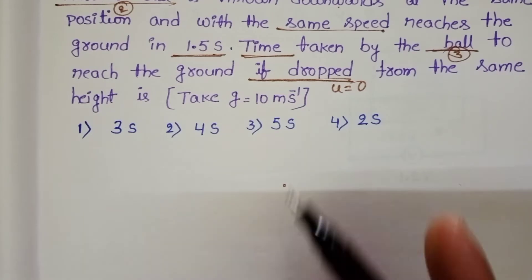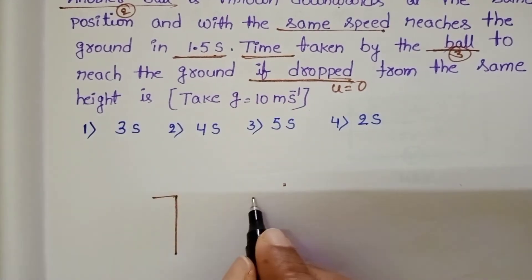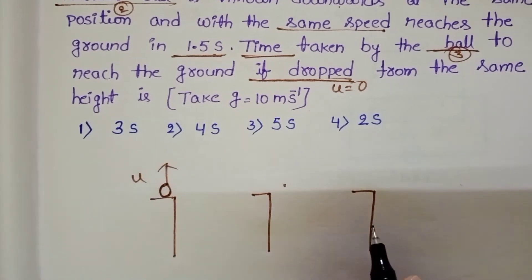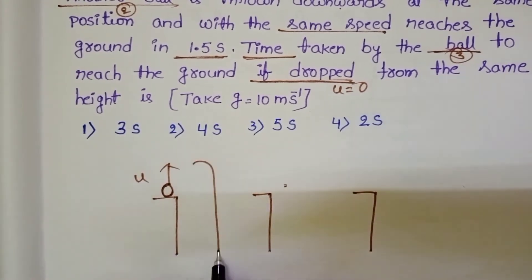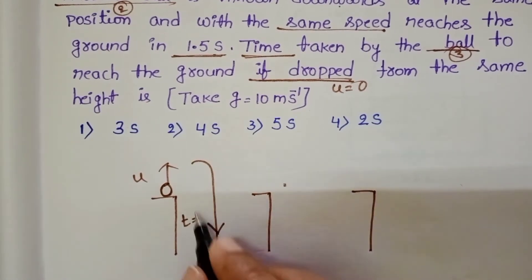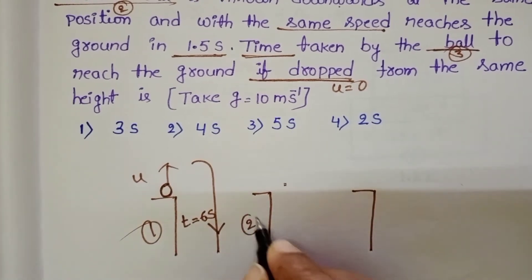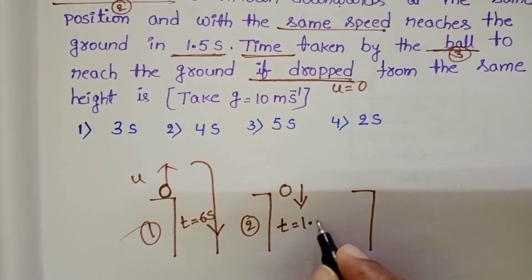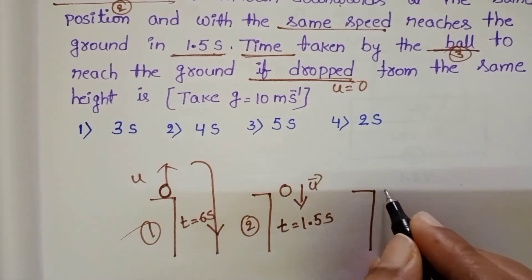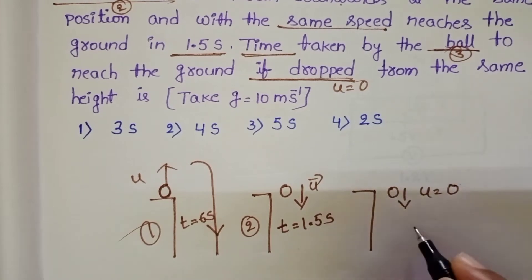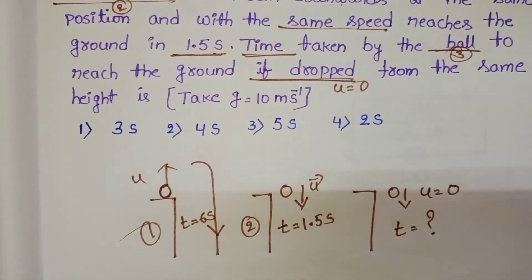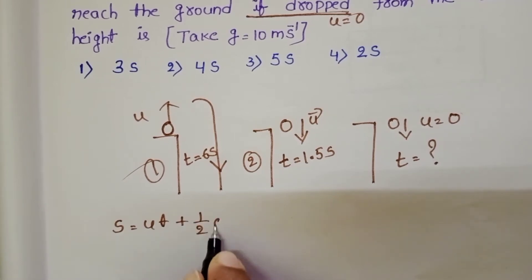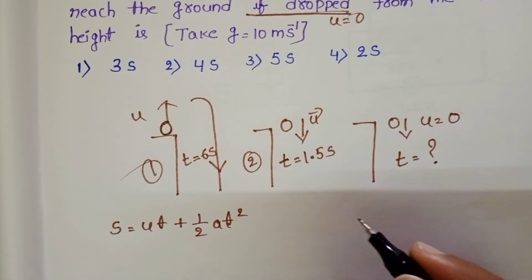The question is straightforward. From the same height, the first ball is thrown upward, the second downward, and the third is simply dropped. We apply the equation of motion: S = ut + ½at². Sign convention is very important here — take the upward direction as positive and downward direction as negative.